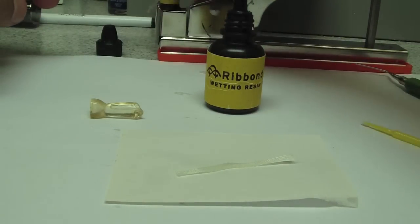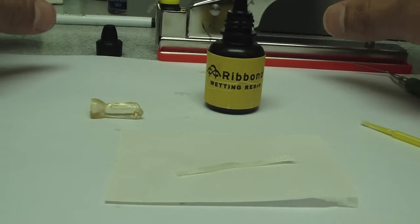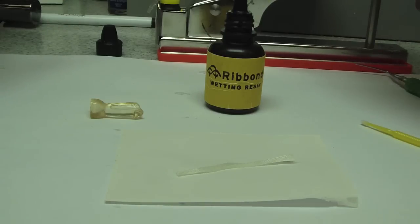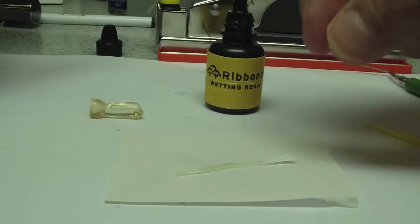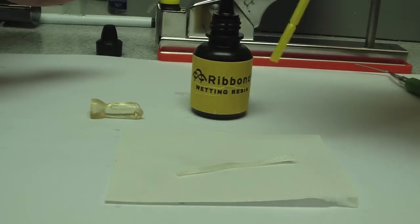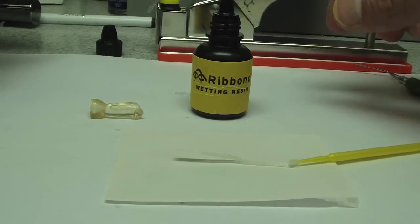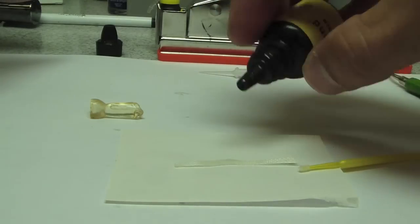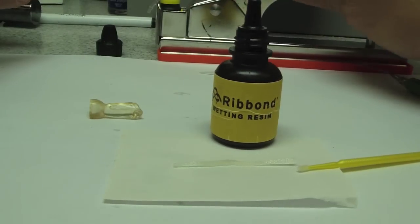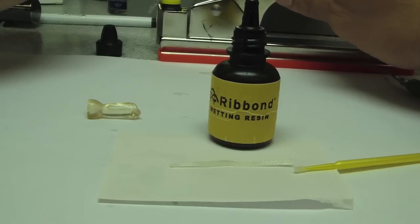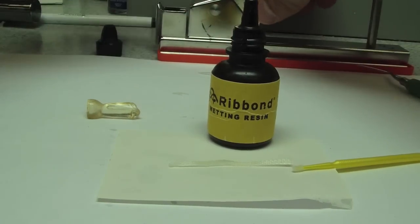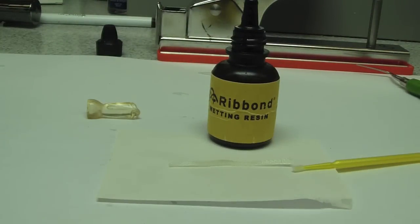The first stage is placing the rib-on. I've measured it out. I don't want to touch it with my fingers. I'm going to take the rib-on wetting resin and place it onto the ribbon itself. It's a light-cured unfilled resin. Don't do it too far in advance of actually placing because it will cure under the light.